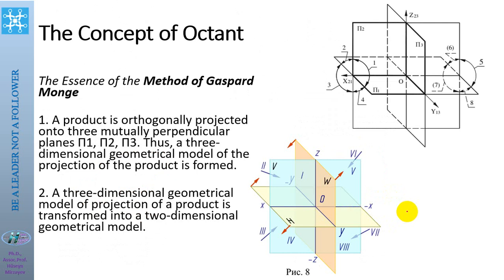For finding the projections of details, we use the methods of Gaspard Monge — called the concept of octants. We take three planes: H for the horizontal plane, V for the vertical (frontal) plane, and W for the profile plane. If three planes intersect in space at right angles, these planes divide the space into eight octants.